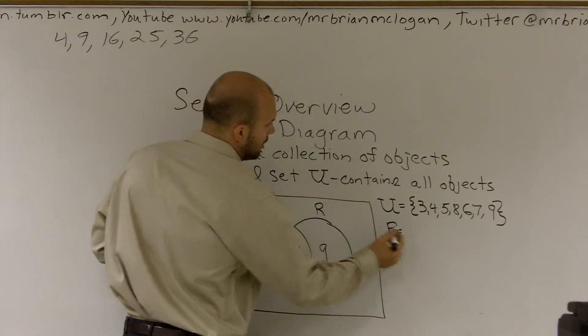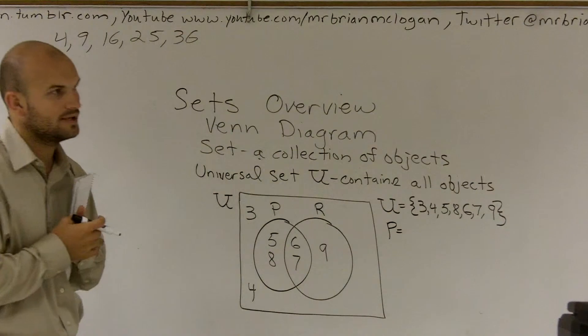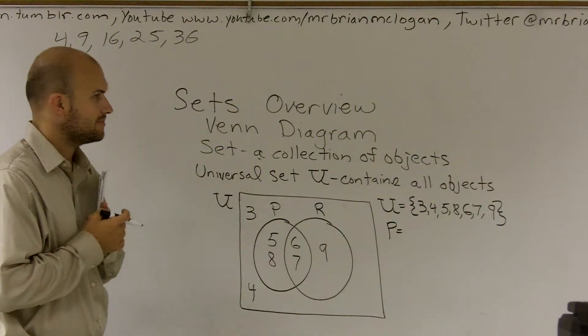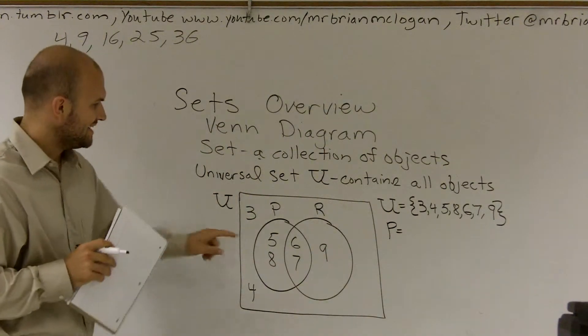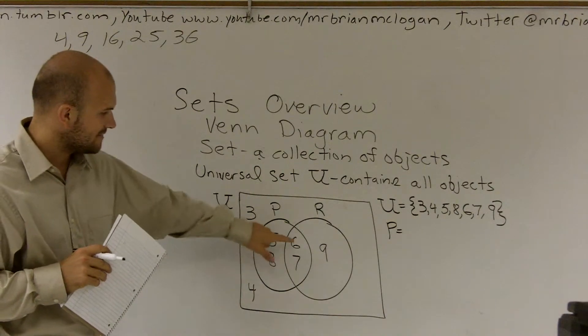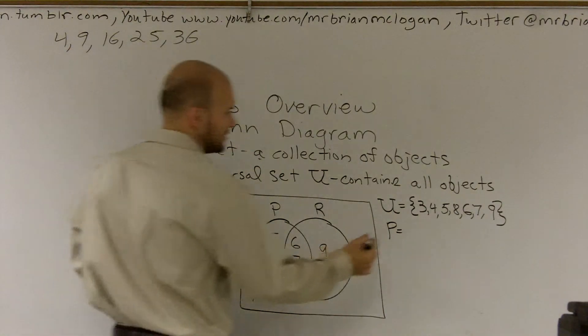So what exactly are all the elements that are located in set P? When I'm looking at set P, I see the elements that are five, six, seven, and eight. So I'm going to go ahead and write.